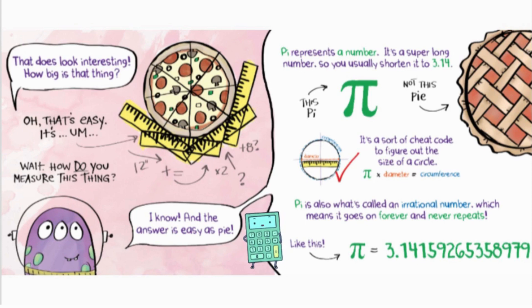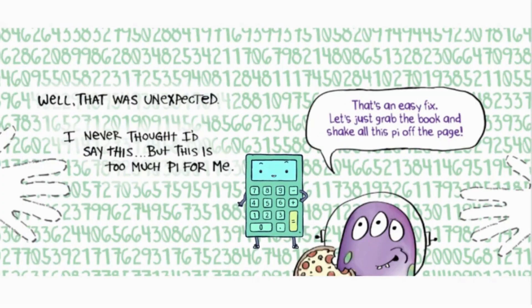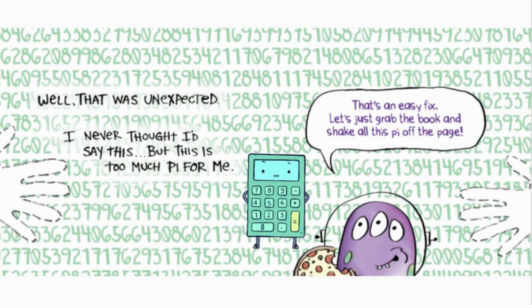Pi is also what's called an irrational number, which means it goes on forever and never repeats. Pi equals 3.14159265358979. Well, that was unexpected. I never thought I'd say this, but this is too much pi for me.